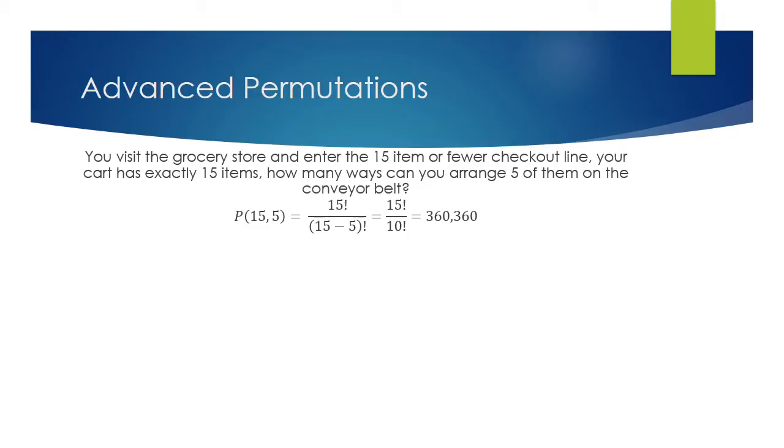And believe it or not, there are actually 360,360 different ways to arrange those objects on the conveyor belt. And that's given by the formula above there. So that seems like quite a bit, right? And it is. And the reason being here is because we are arranging 15 items, which is a lot.